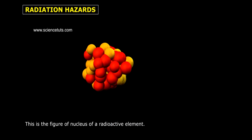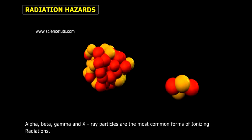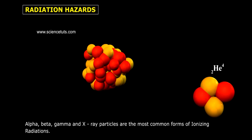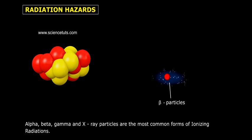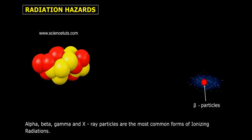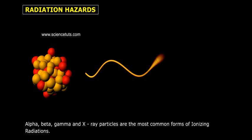This is the figure of the nucleus of a radioactive element. Alpha, Beta, Gamma, and X-ray particles are the most common forms of ionizing radiations.